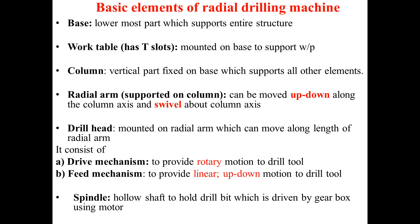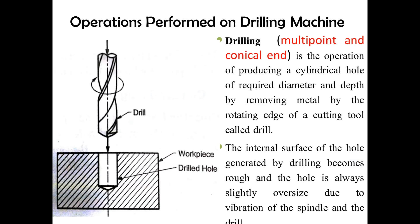All basic elements of the radial arm drilling machine and their functions are explained on this slide. Now we will discuss different operations performed on the drilling machine. The first and most basic operation is drilling — its function is to create a cylindrical hole. We use a twist drill with a conical end to initiate the hole. It is a multi-point conical-end cutting tool used for creating a hole of the desired dimension.